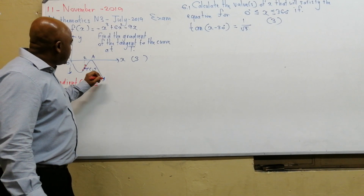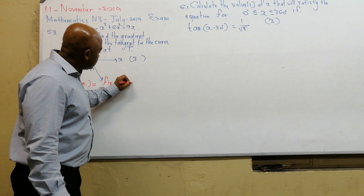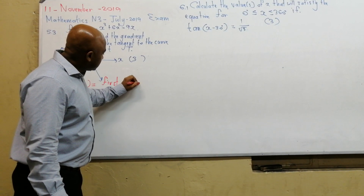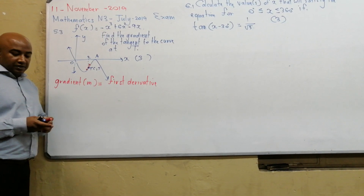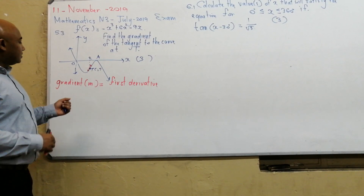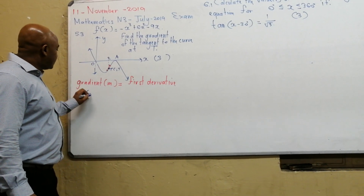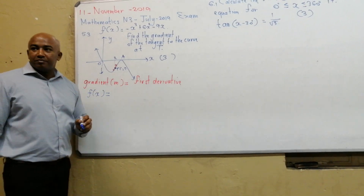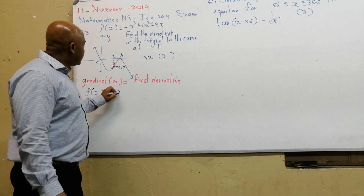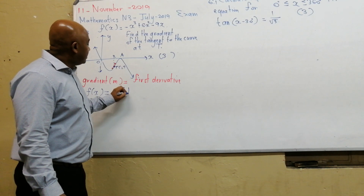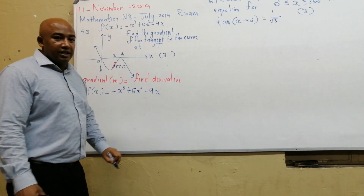In calculus, the gradient m is equal to the first derivative. So f of x is the original equation, which is minus x to the power 3 plus 6x squared minus 9x.